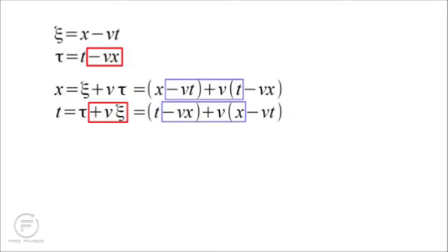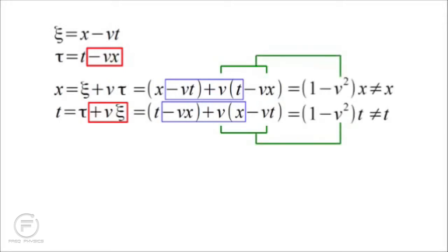The second and third terms in blue boxes cancel out: minus vt plus vt, minus vx plus vx. Unfortunately the fourth terms do not cancel, leaving x equals 1 minus v squared times x — which of course isn't equal to x — and likewise for t. Indeed, 1 minus v squared is something a little bit less than 1. So in transforming from one system to the other and back, we've had some shrinkage. The obvious way to counteract that would be with a little bit of expansion or dilation.